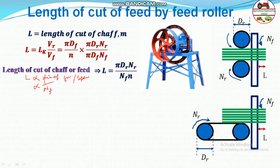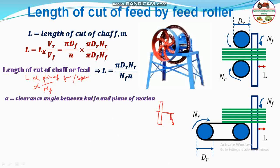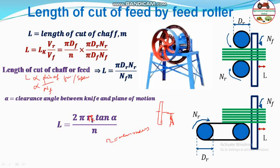If the clearance angle alpha between the knife and the plane of motion is known: the flywheel rotates on a plane, and the knives are attached at a certain angle — the clearance angle alpha. The length of cut in meters equals 2 times pi times r times tan(alpha) divided by n, where r is the mean radius (distance from the flywheel center to the center of the throat) and n is the number of knives. In this case, you do not need the flywheel speed or feed roller speed.